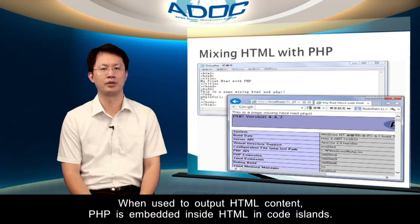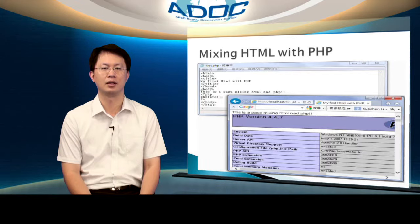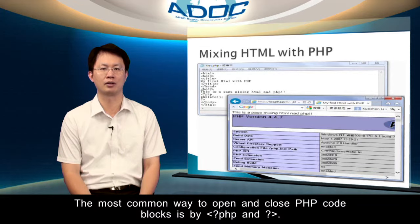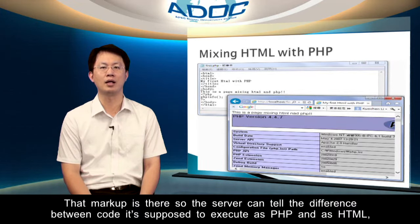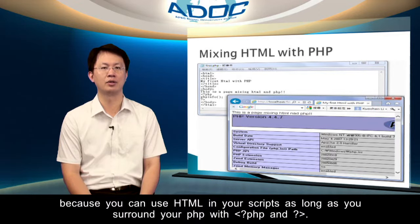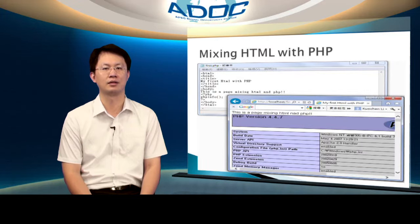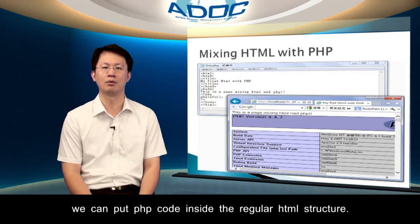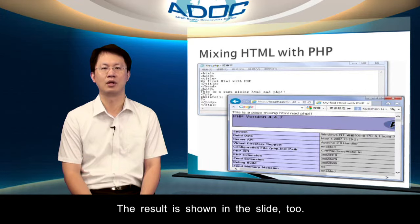When used to output HTML content, PHP is embedded inside HTML. The most common way to open and close PHP code blocks is with <?php and ?>. That markup is there so the server can tell the difference between code that is supposed to execute as PHP and as HTML. Because you can use HTML in your scripts, as long as you surround your PHP with <?php and ?>, you can put PHP code inside regular HTML structures. The result is shown in the slide.